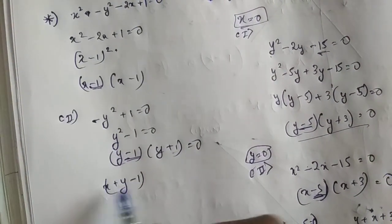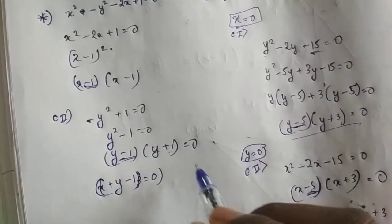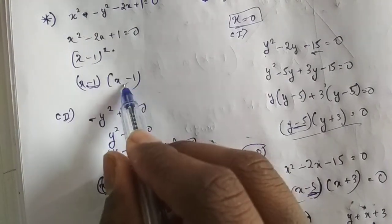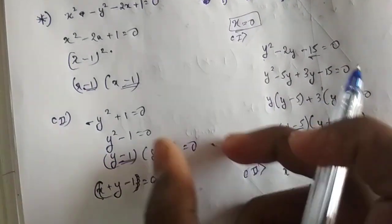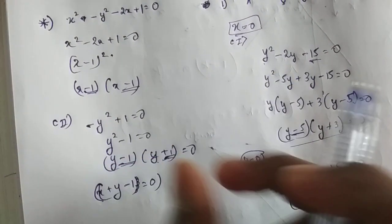So we can write x plus y minus 1. Why am I putting brackets? This is one equation. By the second equation you see there is plus 1 but there is minus 1, so you cannot write y plus 1 equals to 0. You cannot declare this as an independent equation.